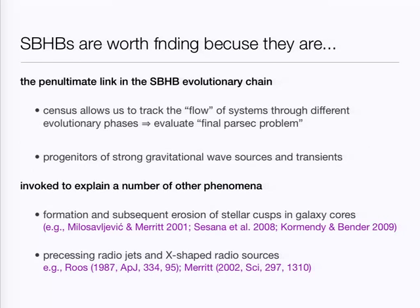Binary supermassive black holes seem to be an inevitable stage in the evolution of the remnant of a merger between two galaxies — the penultimate stage in the evolution of the two black holes. The two parent galaxies merge, and very quickly the black holes find each other at the bottom of the potential well. They form a bound binary. Once they reach the stage where the binary hardens — meaning the orbital velocity exceeds the velocity dispersion of the stars — the binary might stall because we ran out of mechanisms for extracting angular momentum from the orbit. This was thought to occur at a separation of about a parsec. More modern work suggests that may not be as big a problem as initially suspected, but it's still a very good idea to find these binaries to evaluate the final parsec problem.